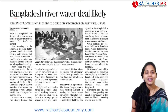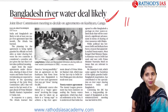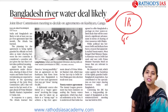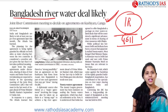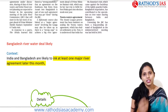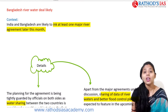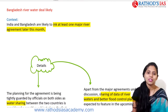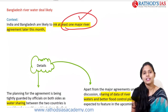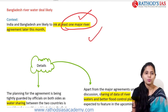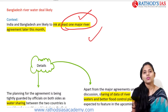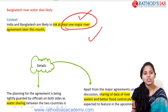The next topic is regarding Bangladesh river water. This article is important for international relations under GS Paper 2. India and Bangladesh are likely to ink at least one major river agreement later this month, because the Prime Minister of Bangladesh, Sheikh Hasina, is visiting India. During this visit, they are expected to sign an agreement on at least one major river.